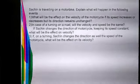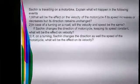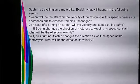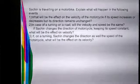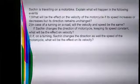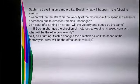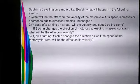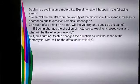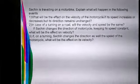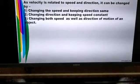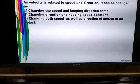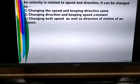If Sachin changes the direction of the motorcycle while keeping the speed constant, the velocity of the object also changes. If on turning Sachin changes both direction and speed, velocity changes as well. So: when speed is the same but direction changes, velocity changes; when direction is same but speed changes, velocity changes; if both speed and direction change, velocity also changes. We can change velocity by changing speed, direction, or both.